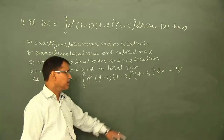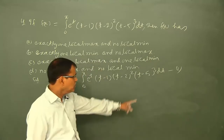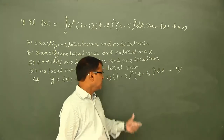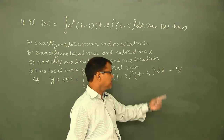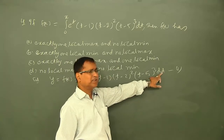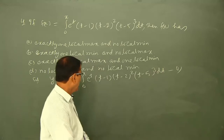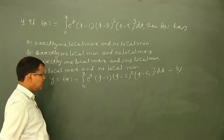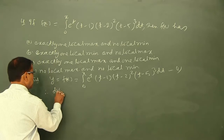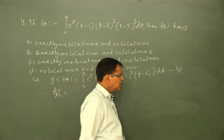To differentiate this integral with respect to x, we use the Newton-Leibniz rule. According to Newton-Leibniz rule, if y = integral of f(t) dt from a lower limit to an upper limit that is a function of x, we differentiate by substituting x into the integrand and multiplying by the derivative of the upper limit.